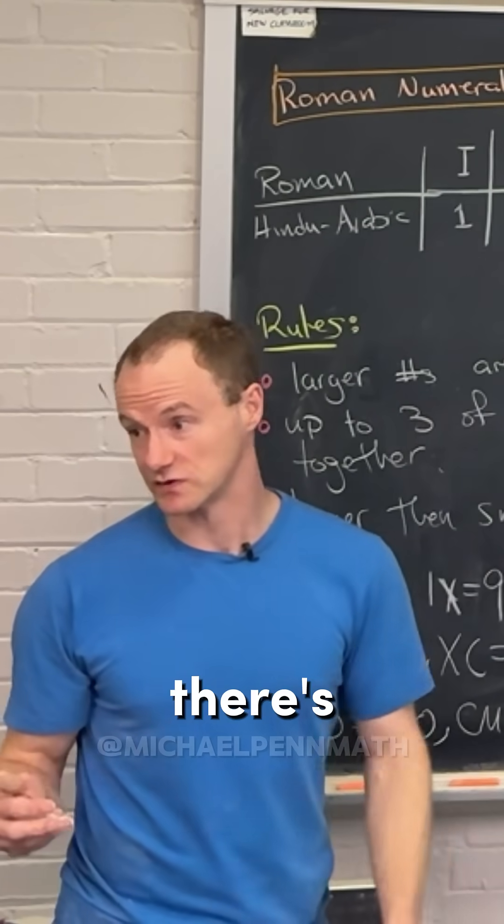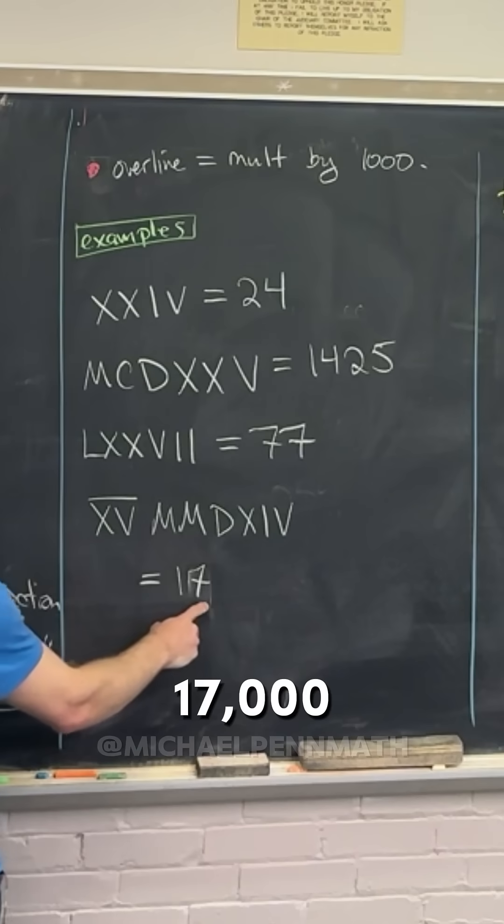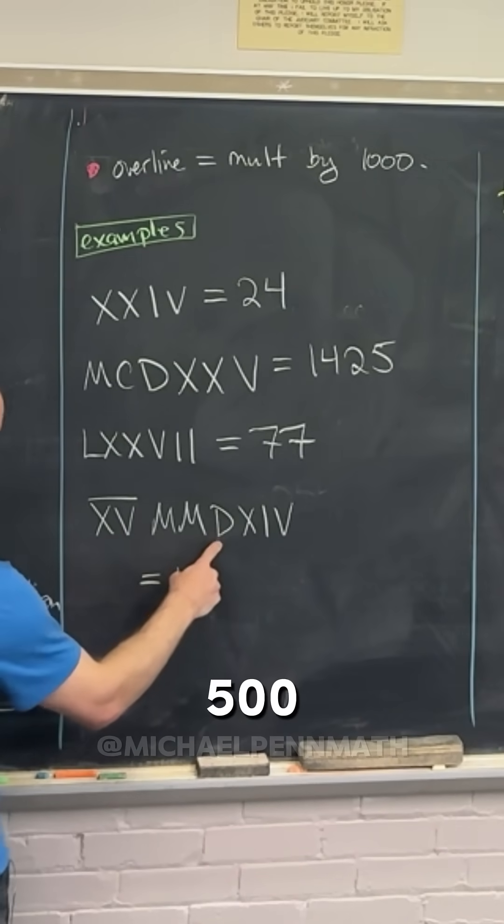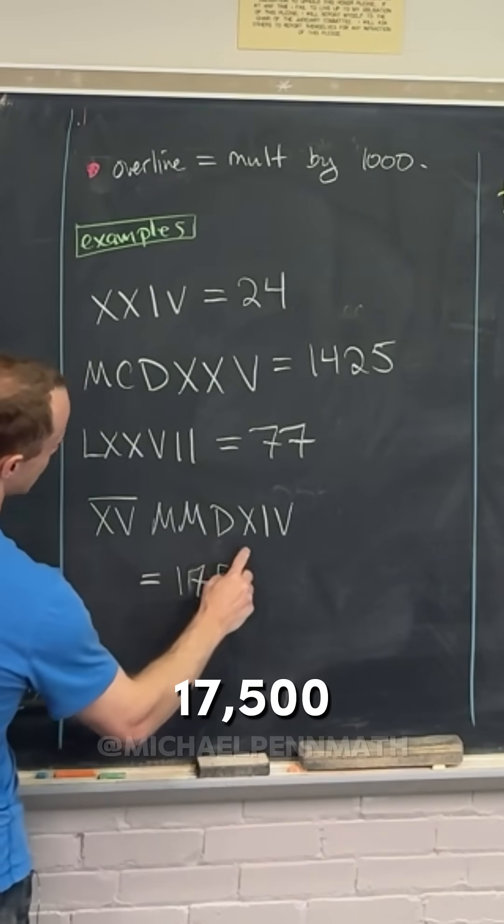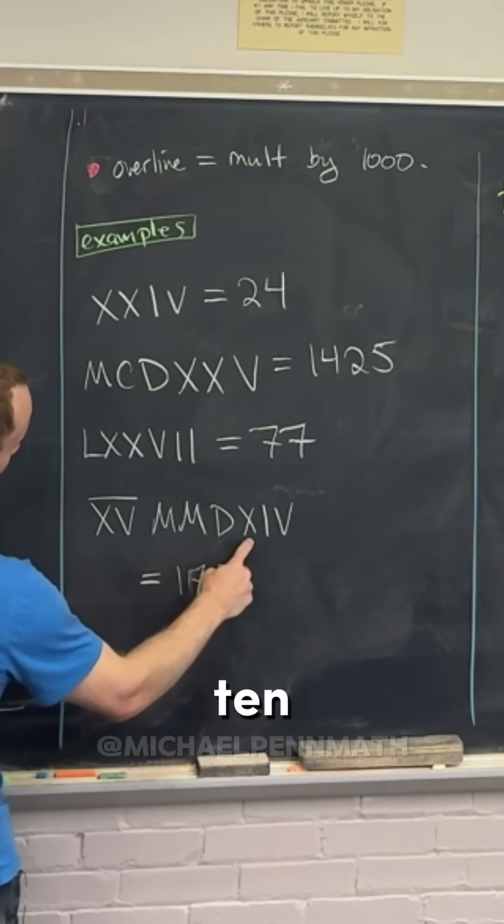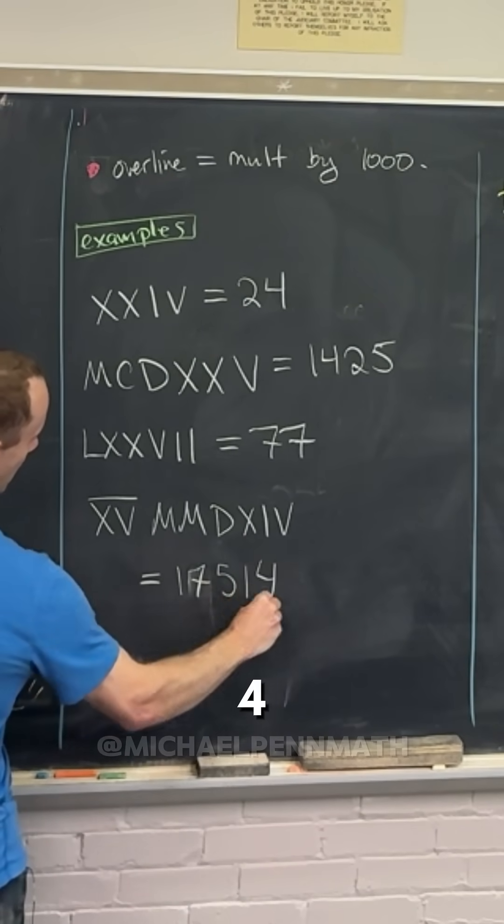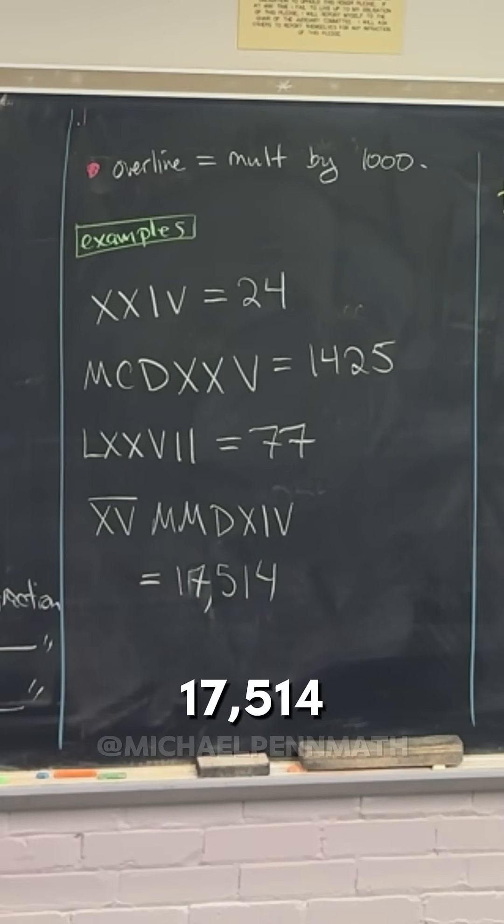Okay, so we've got 17,000, and then D is 500, so 17,500. X is 10, and then IV is 4, so 17,514.